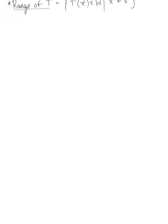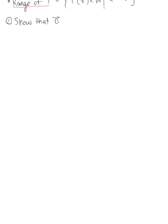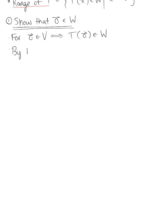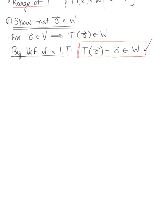We have three properties to prove. The first: we need to show that the zero vector is in W. For some zero vector in V, we know by definition that the transformation of the zero vector equals the zero vector, which is in W. This confirms that the zero vector exists in the set.